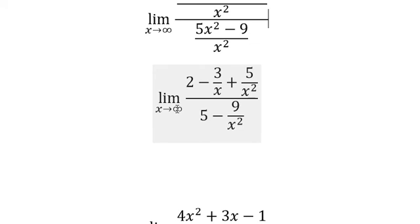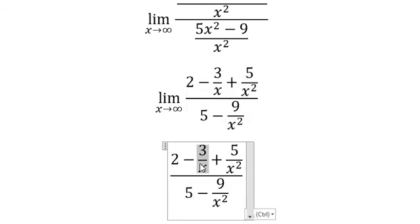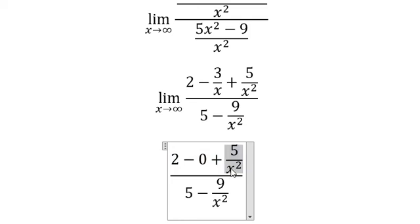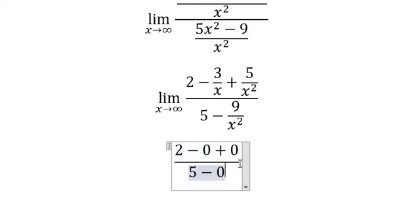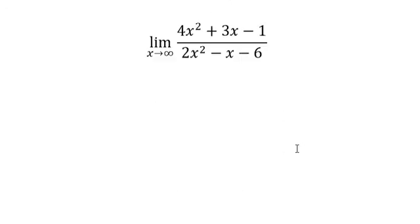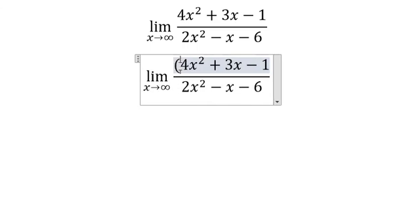approaches positive infinity, these terms become 0, 0, and 0. So we get 2 over 5. Now similarly for this one, we divide both sides by x to the